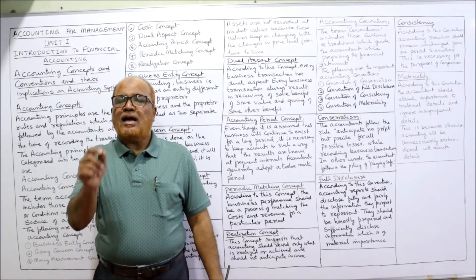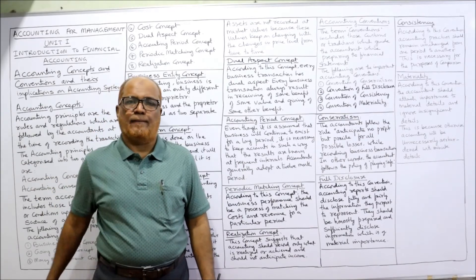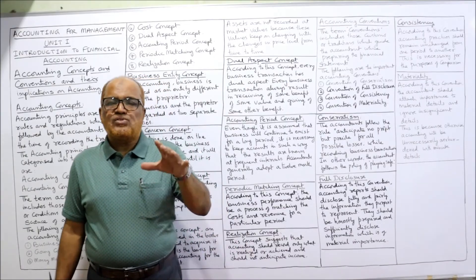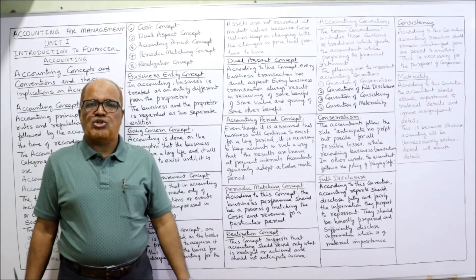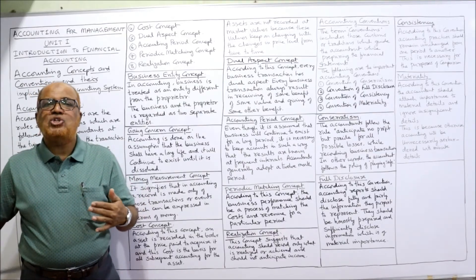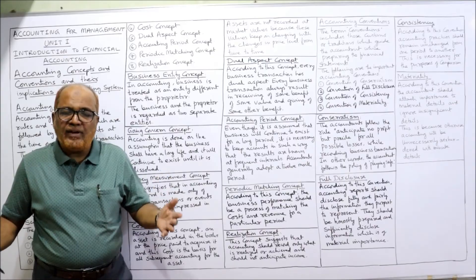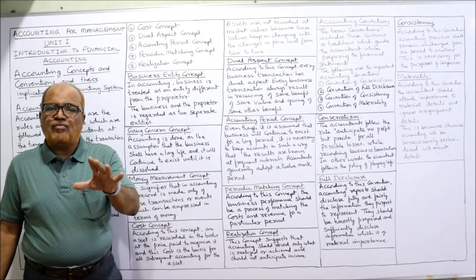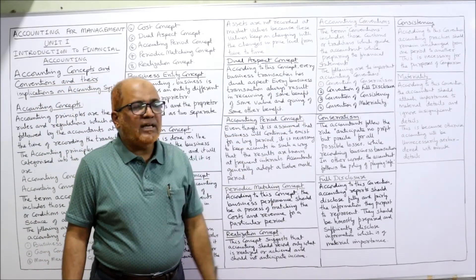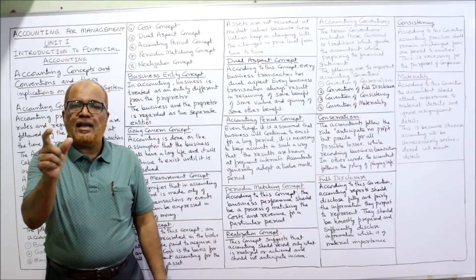Next is the convention of consistency. This convention says the method of accounting should be consistently followed from one year to another. The method of accounting should not be changed frequently. For example, if a business follows the straight line method of depreciation, the same method should be followed every year. If the method is changed frequently, comparison between years becomes difficult. Once a method is followed, it should be continued in subsequent years.